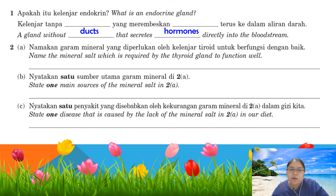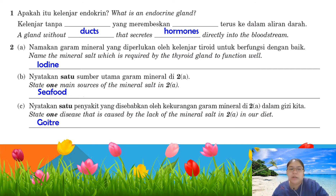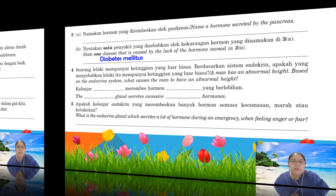The question asks: what mineral salt is required by the thyroid gland to function well and prevent goiter? The answer is iodine. The main source of iodine is seafood. If you lack iodine, the disease caused is goiter.